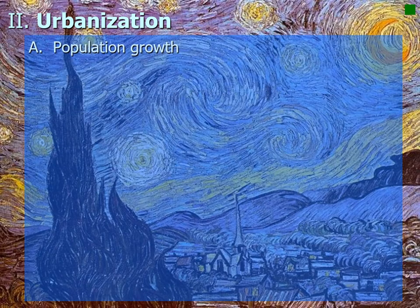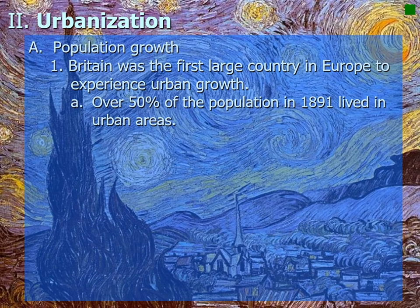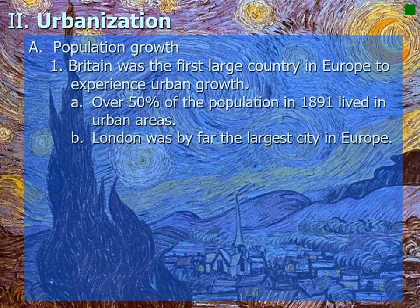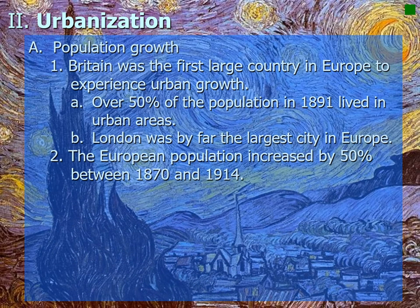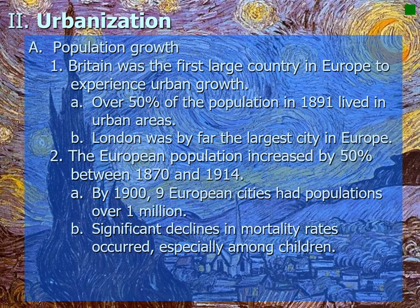Regarding urbanization and population growth: Britain was the first large country in Europe to experience urban growth, with over 50% of the population living in urban areas by 1891. London was by far the largest city in Europe at this time. The European population as a whole increased by about 50% between 1870 and 1914, and by 1900 nine European cities had populations of over one million people.